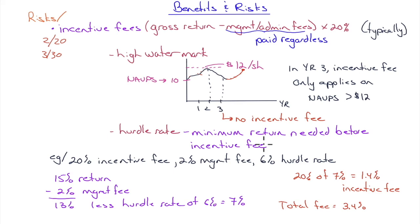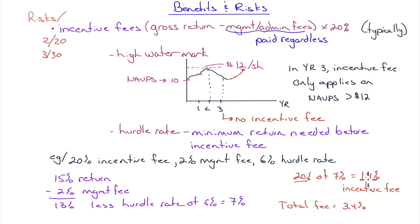There may also be a hurdle rate — a minimum return needed before the incentive fee applies. Example: a fund with a 20% incentive fee, 2% management fee, 6% hurdle rate, that earned a 15% return. First, the 2% management fee is deducted — leaving 13%. The first 6% goes entirely to investors — that's the hurdle rate. That leaves 7%; the manager gets 20% of that 7%, which is 1.4%. Total fees: 2% + 1.4% = 3.4% out of the 15% return.